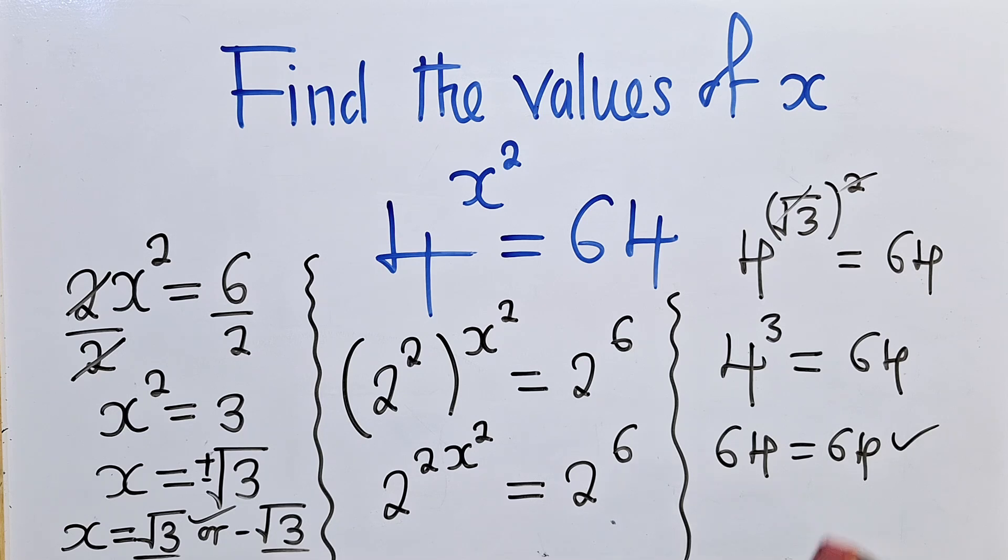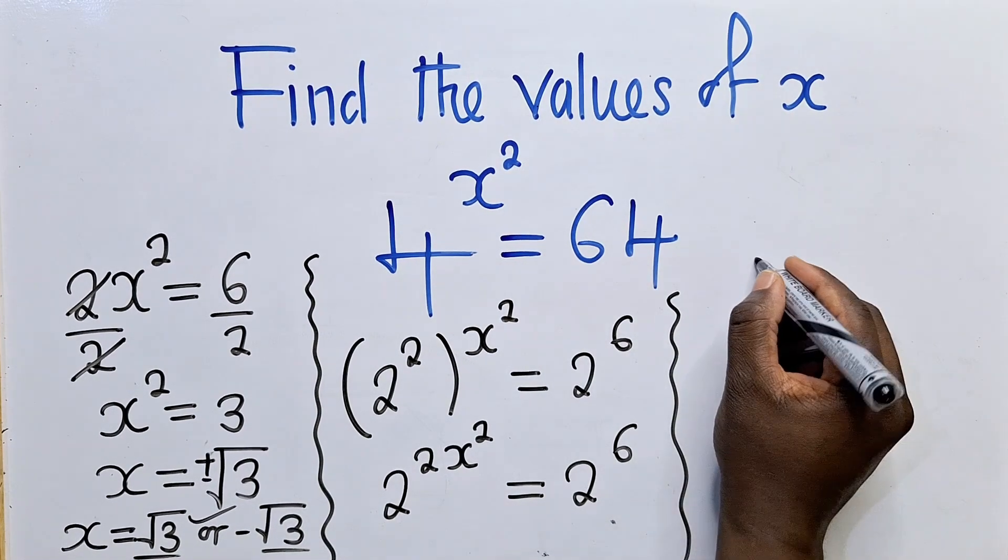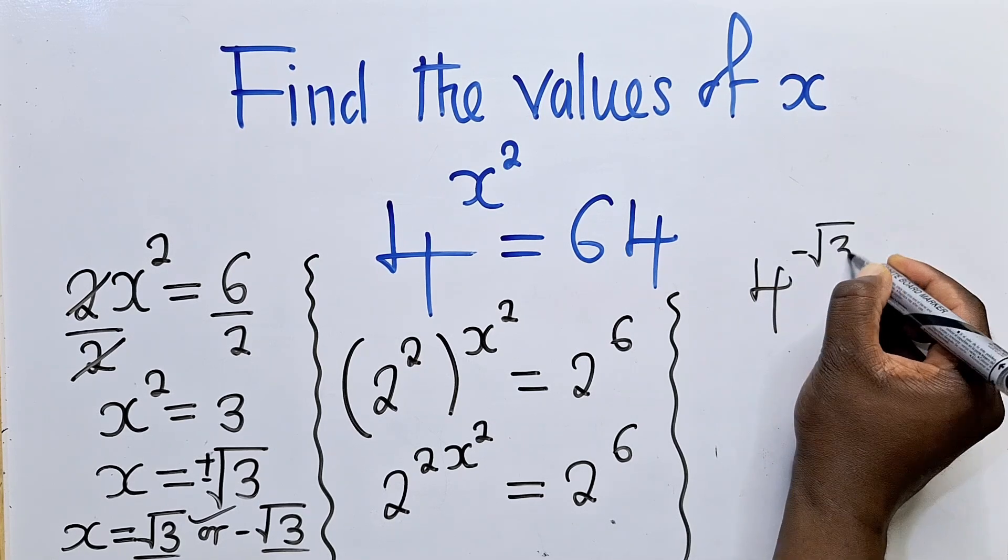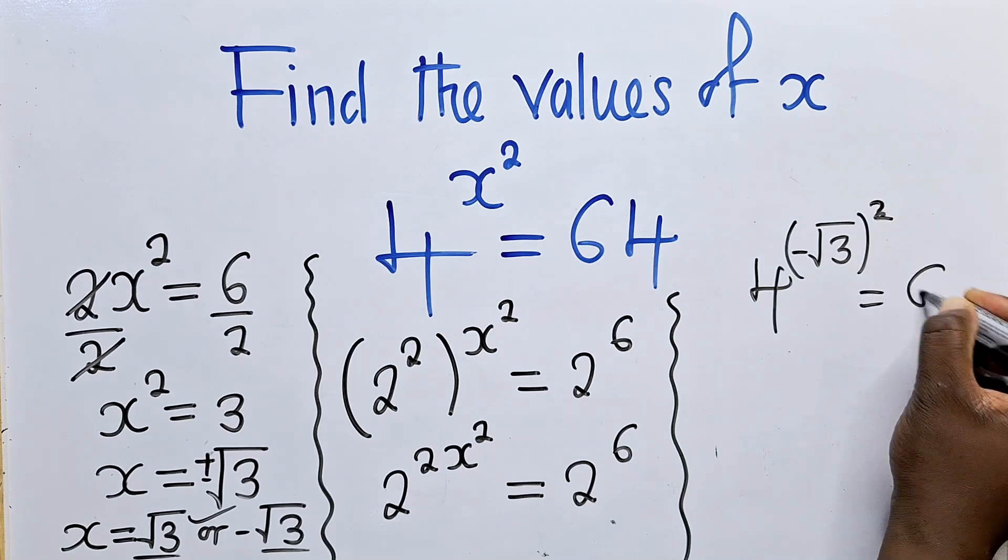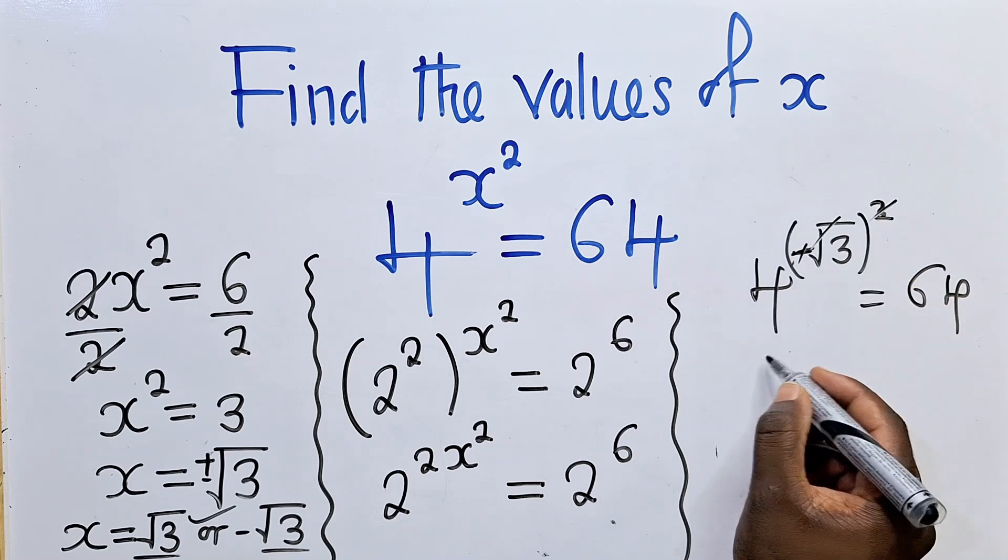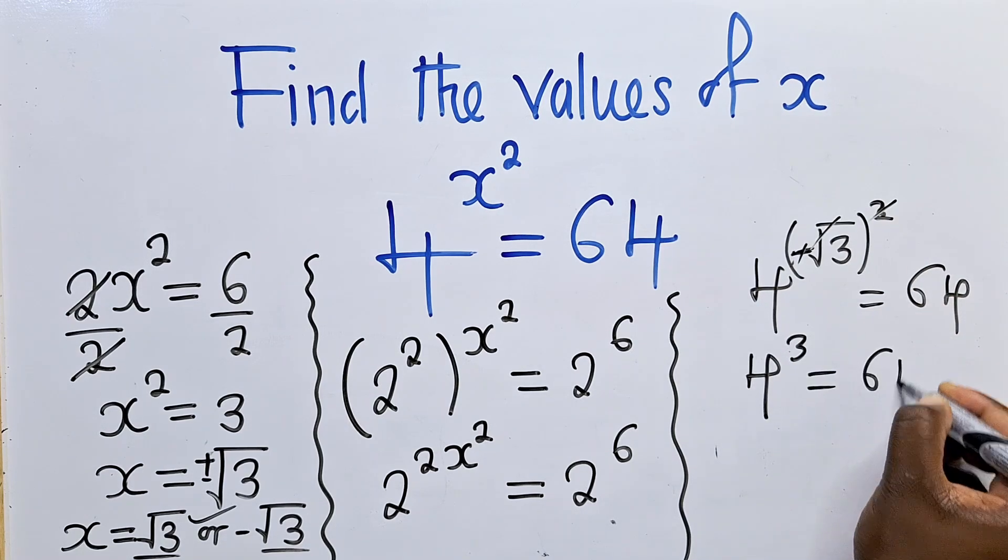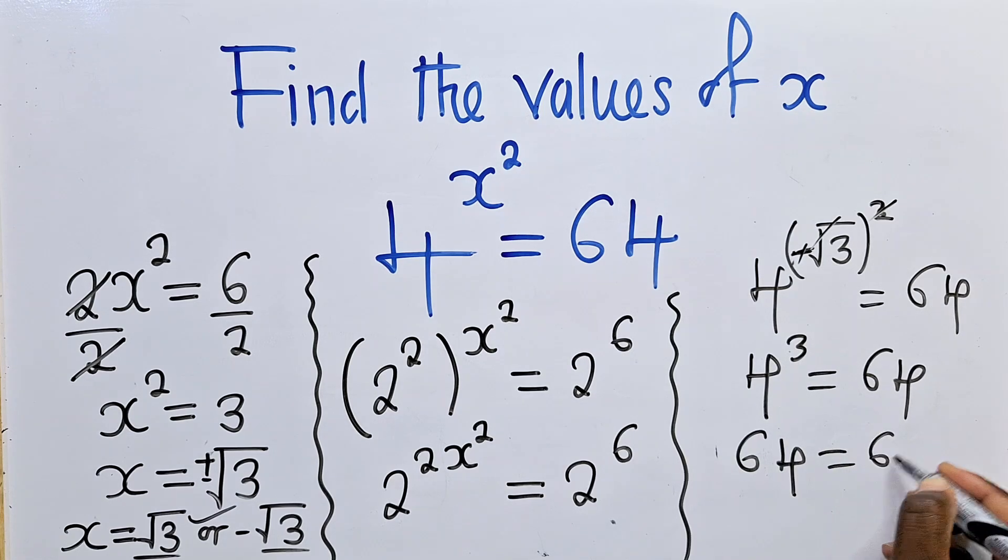For this other solution, we can also do the same. We write 4 power negative square root of 3 power 2, which is equal to 64. So negative squared will give us a positive. This root and the power 2 will cancel. We shall remain with 4 power 3, which is equal to 64. 4 power 3 will give us 64, which is equal to 64.